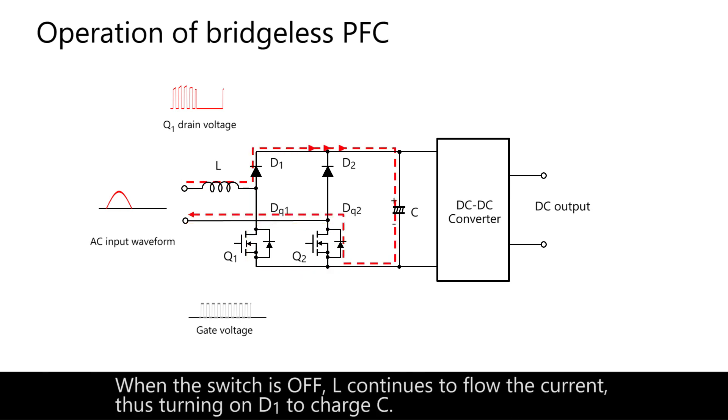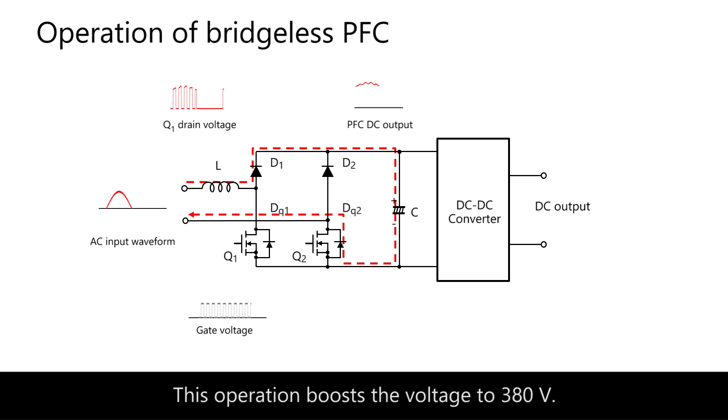When the switch is off, L continues to flow the current, thus turning on D1 to charge C. This operation boosts the voltage to 380 volts.